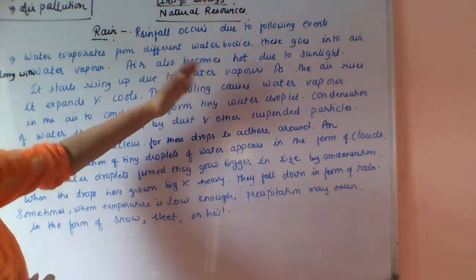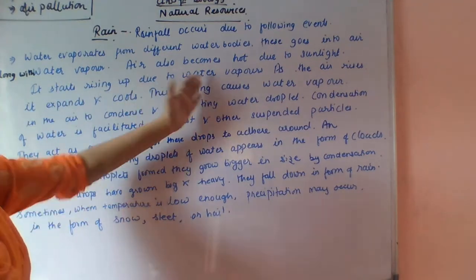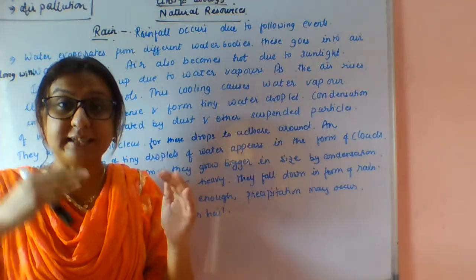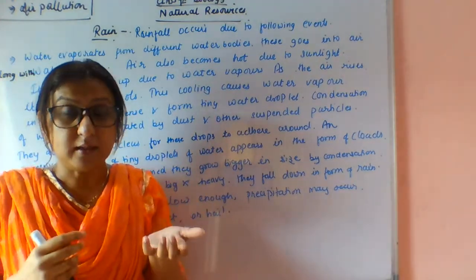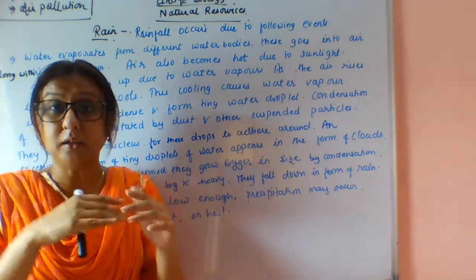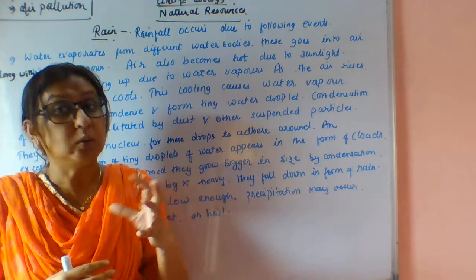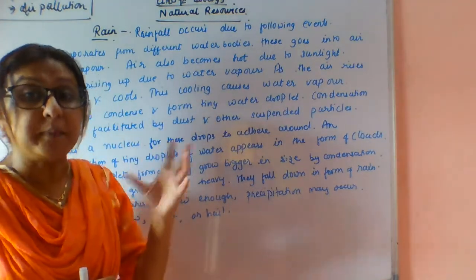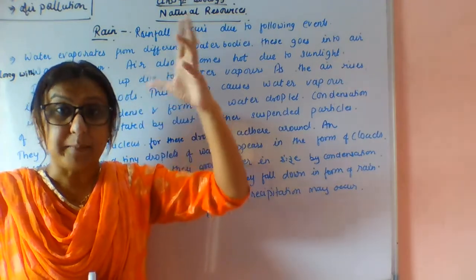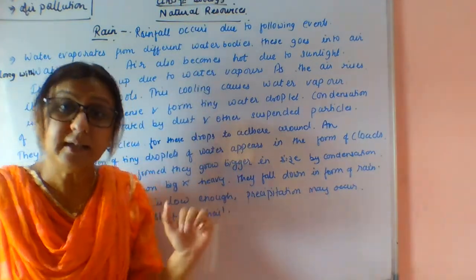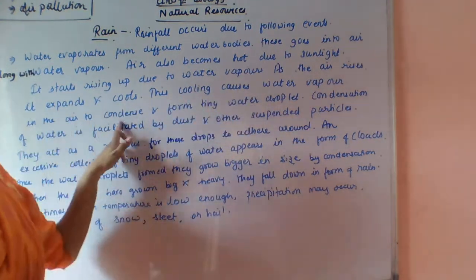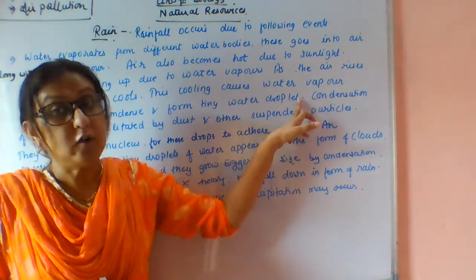Air becomes hot due to sunlight and starts rising up. As it rises up, it expands and cools. Warm air rises up and when it rises up it gets cool because the temperature is low. This cooling causes water vapor in the air to condense and form tiny water droplets.